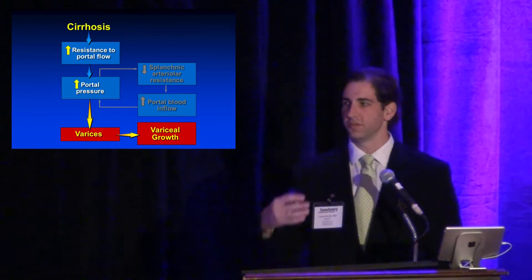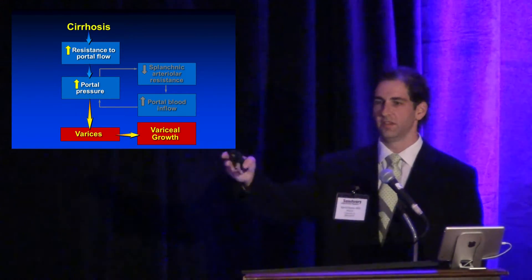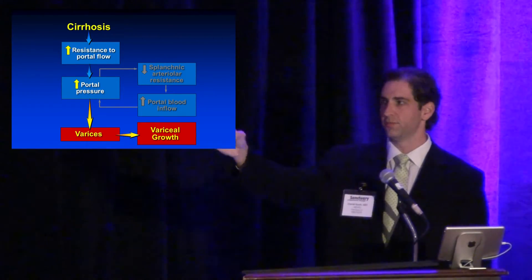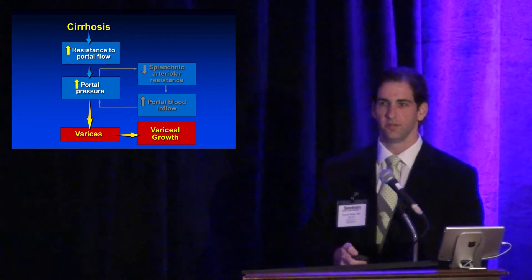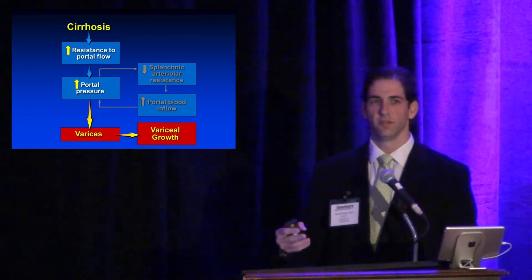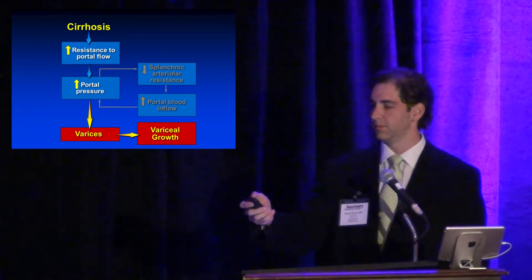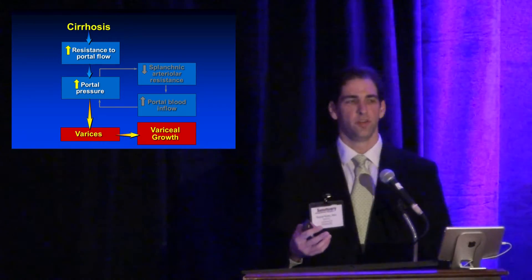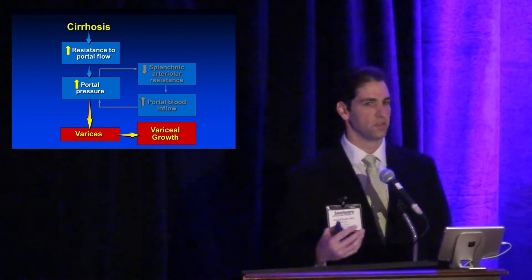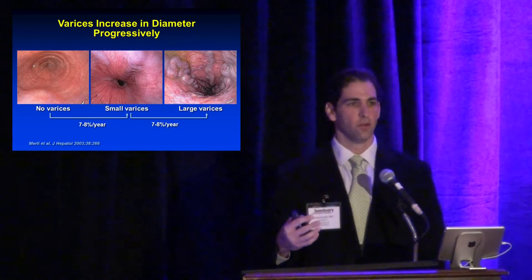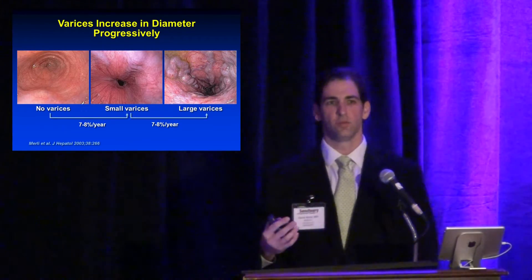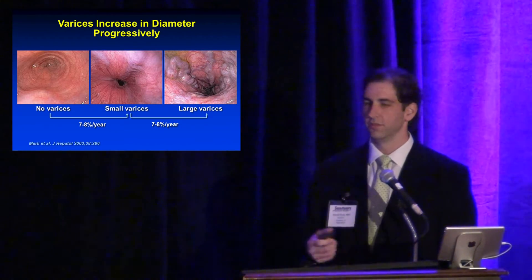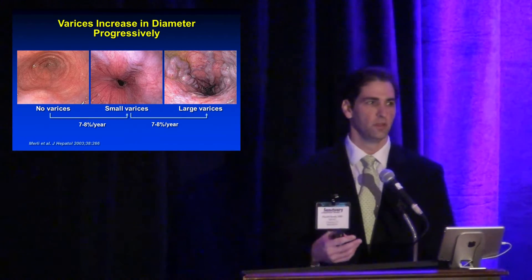As portal pressure worsens, varices enlarge and eventually bleed. Initially patients have no varices, they progress to small ones and then large ones at about seven to eight percent per year. The worse the liver disease, the greater the chance of having varices. There is a threshold effect: the hepatic venous pressure gradient, or HVPG, must be above 12 mmHg for complications like ascites and variceal bleeding to occur. Below that threshold, none of these complications will develop.